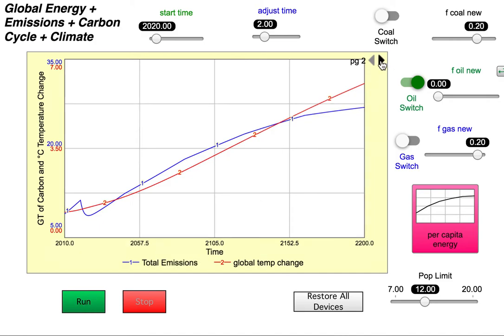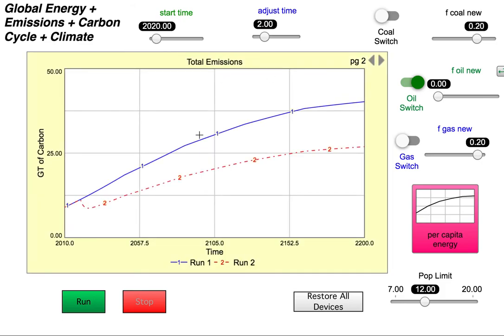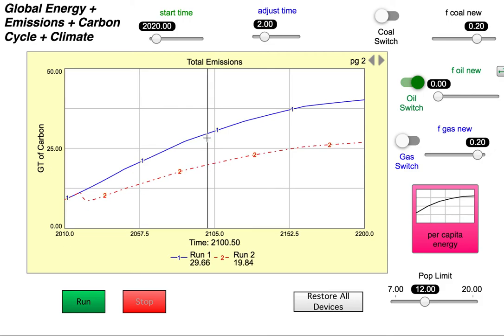Now I'm going to look at page two. This shows the total emissions. This is what we're interested in. We want to find the total emissions in 2100 and how they differ. So I slide the cursor along back and forth here until I get to 2100. That's right in there.